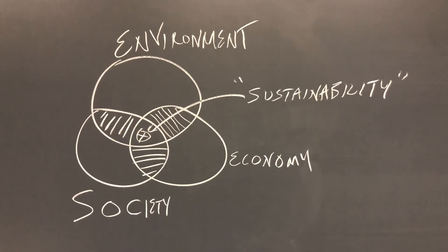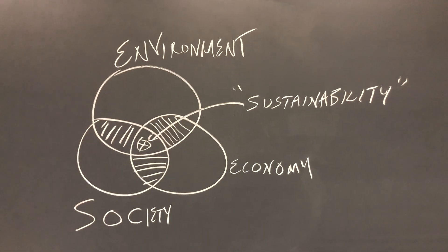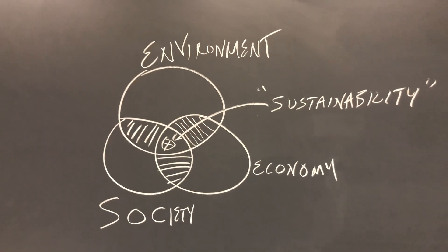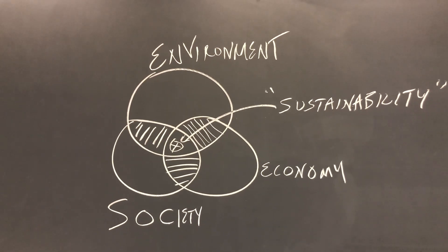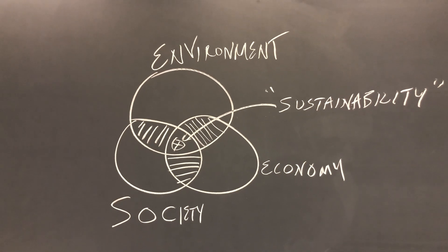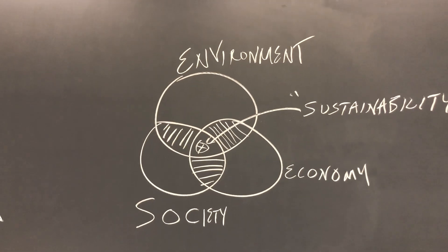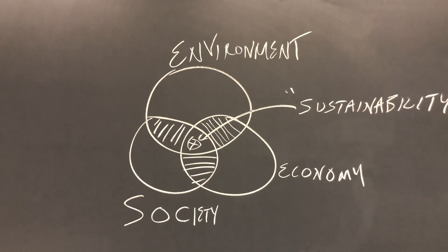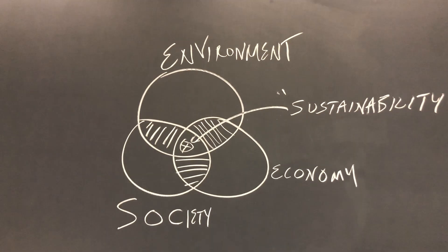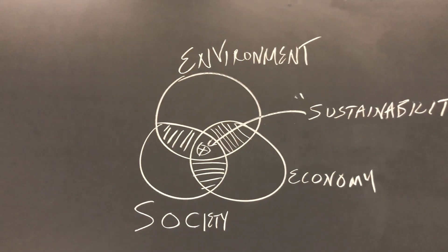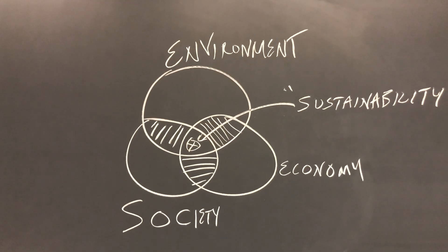Sustainability, in quotes there, you'll see, is when all three areas are in balance. There's some conversation to be had about what happens in the areas where only two circles overlap. I've shaded those there with the little stripes. So what is exactly happening in the area between environment and economy where society isn't there?